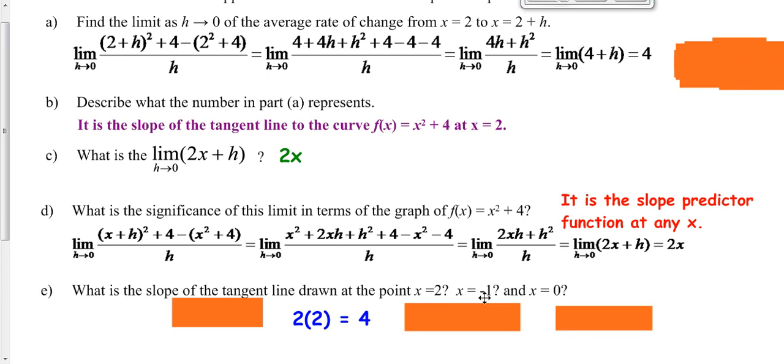Now, we've got to take our negative one and plug it into our slope predictor function. And two times negative one is negative two. And then we've got to take zero and plug it in. So, in other words, the slope at zero on this function is zero.